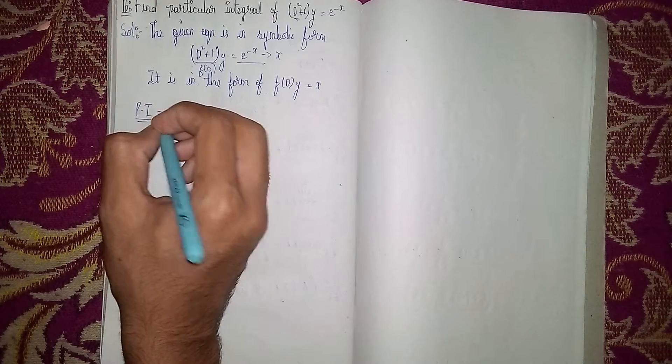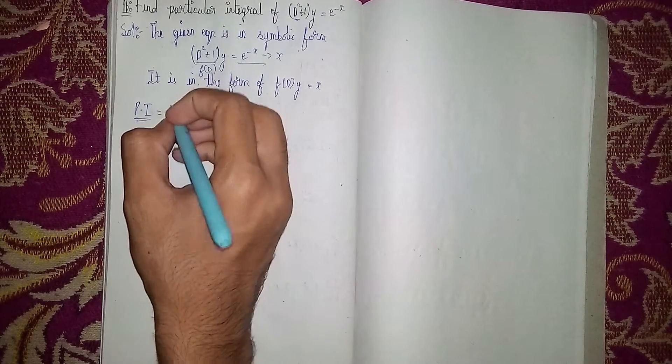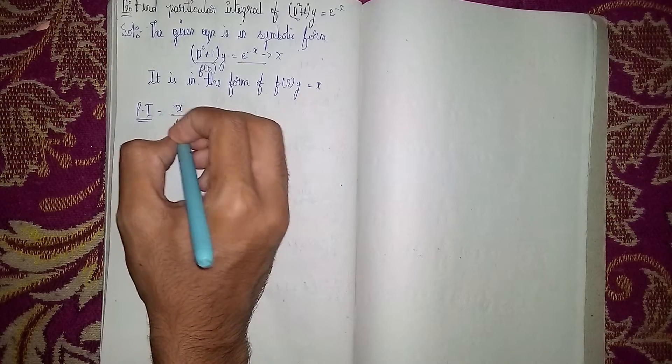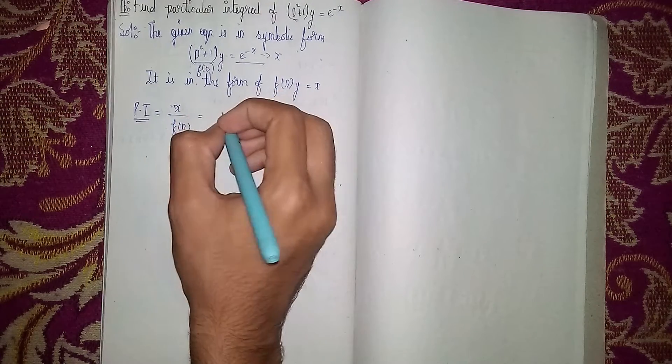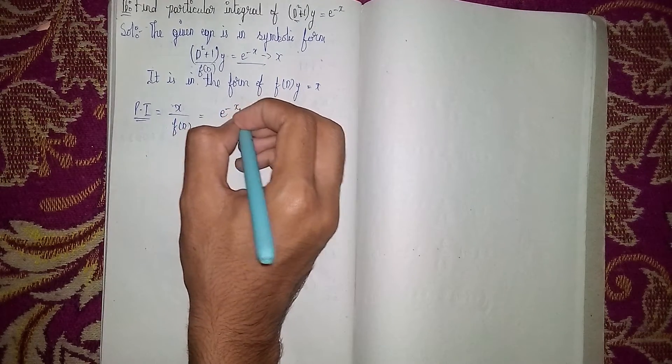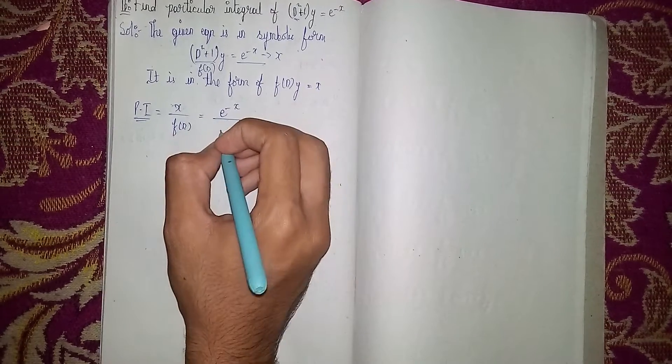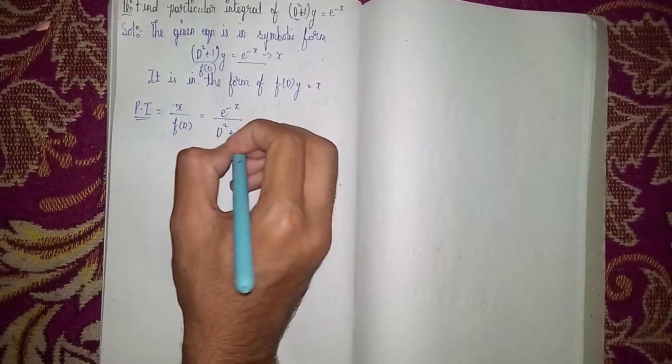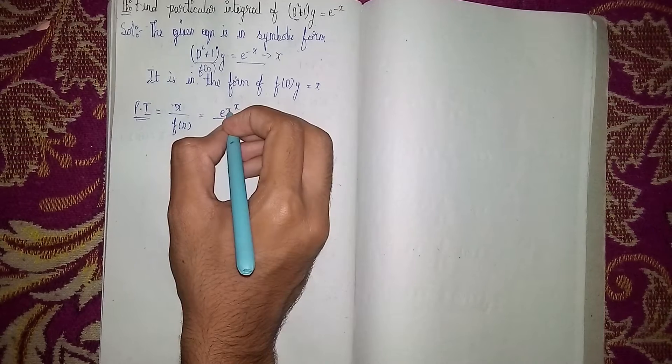PI stands for particular integral. PI = X/f(D). What is X? e^(-x). And f(D) is D² + 1. So we get e^(-x)/(D² + 1).